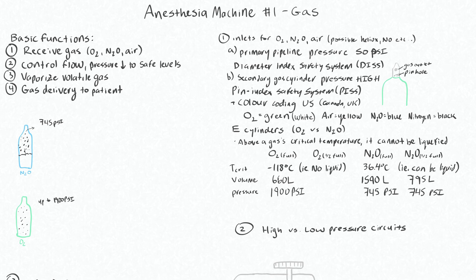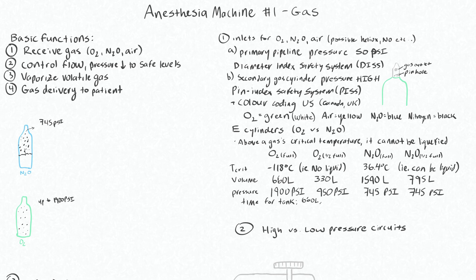Oxygen, on the other hand, is only in gas form, so the pressure in the tank is proportional to the remaining gas. If you've used half of your O2 tank you're left with 330 liters and the pressure will be half of the original 1900 PSI — so 950 PSI. You can use this knowledge to estimate time remaining. Taking 660 liters divided by 1900 PSI gives you 0.35 liters per PSI.